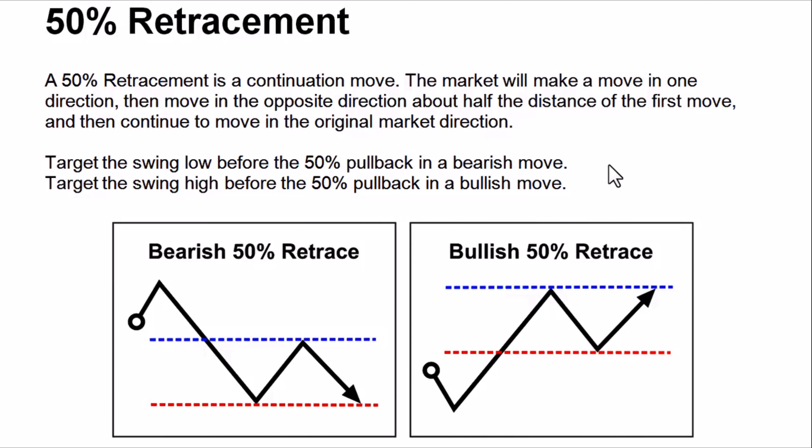When talking about a bearish pullback move, you search for a swing low where you can use Fibonacci to measure and see the 50% retrace pullback, then the market continues in its original direction. The same thing applies for a bullish move — you look for a swing high, use Fibonacci to measure the swing high and swing low, and you'll see the 50% retrace pullback before the market continues towards its original direction.